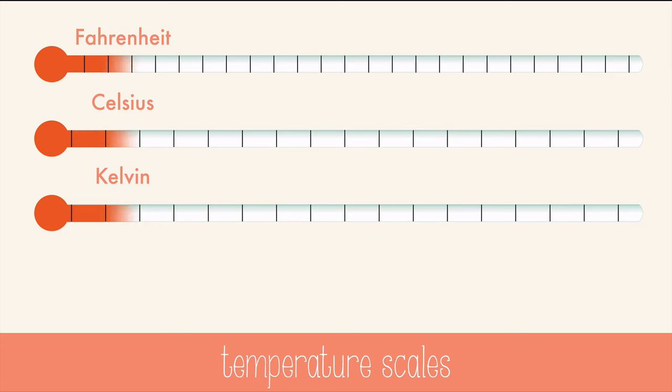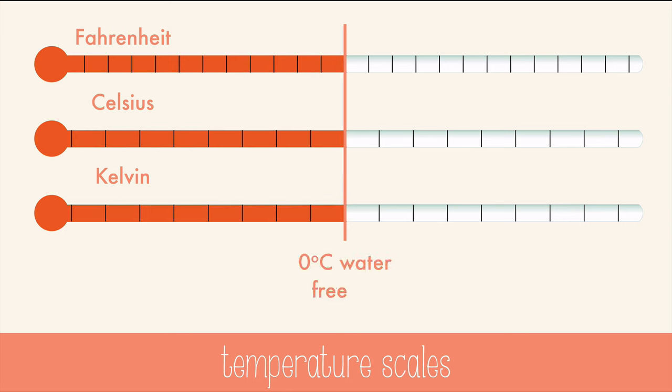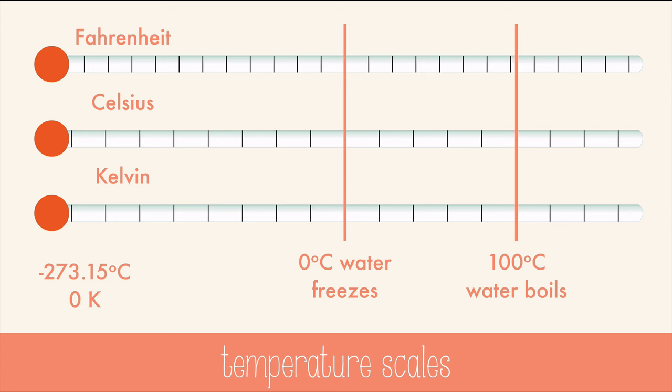The Celsius scale is based on the freezing point and boiling point of water. But even the Celsius scale isn't the best, because absolute zero on the Celsius scale is negative 273.15 degrees.